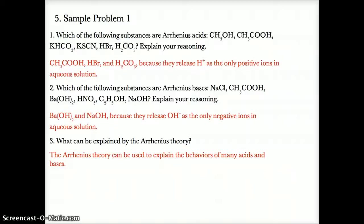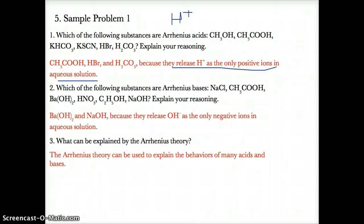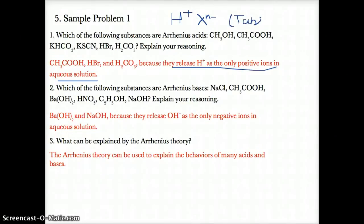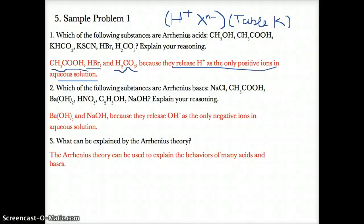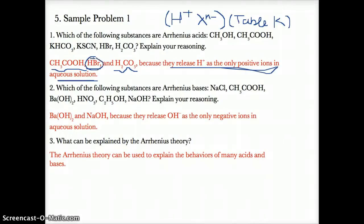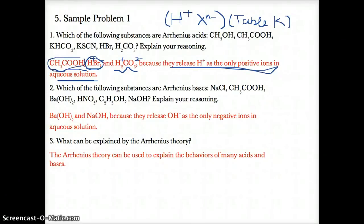Sample Problem 1: Arrhenius acids are substances that release H+ as the only positive ions in aqueous solution. You can identify them if they have H+ at the front followed by a negative ion (written generically as X^N-), or if they're listed on Table K. In this case, the Arrhenius acids are CH3COOH (acetic acid, on Table K), HBr (H+ followed by Br-), and H2CO3 (H+ followed by CO3^2-).